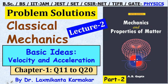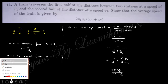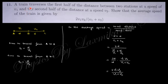Let's start with question number 11, which says: a train traverses the first half of its distance between two stations at a speed of v1, and the second half of the distance at a speed of v2. The time taken for the first distance d is d/v1, and for the next half the time is d/v2.